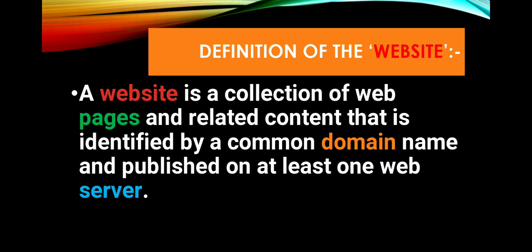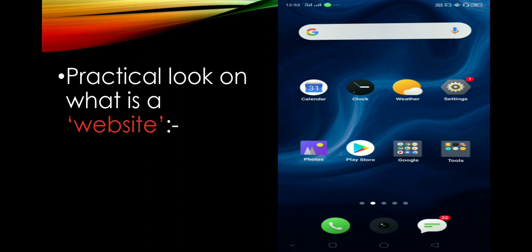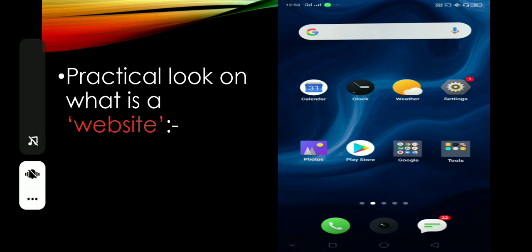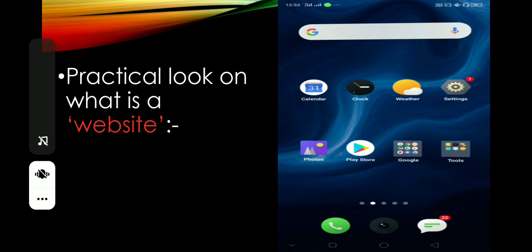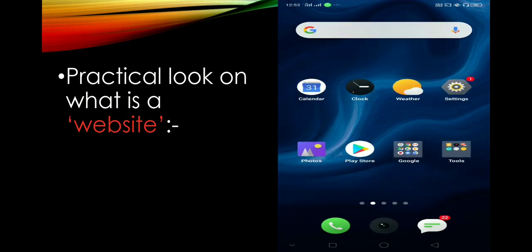There are some pages, some web pages. There is related content — photos, PDFs, videos, etc. The data is used as a store. This is a simple definition of a website. We can use a website in a practical way, as a general video.